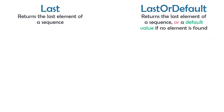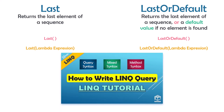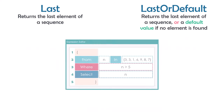We can also use both operators in a second way — with a lambda expression inside the brackets. This lets us set a condition to filter elements before getting the last one. If you don't know what a lambda expression is or how to write one, please check the referenced video where it is explained in detail.